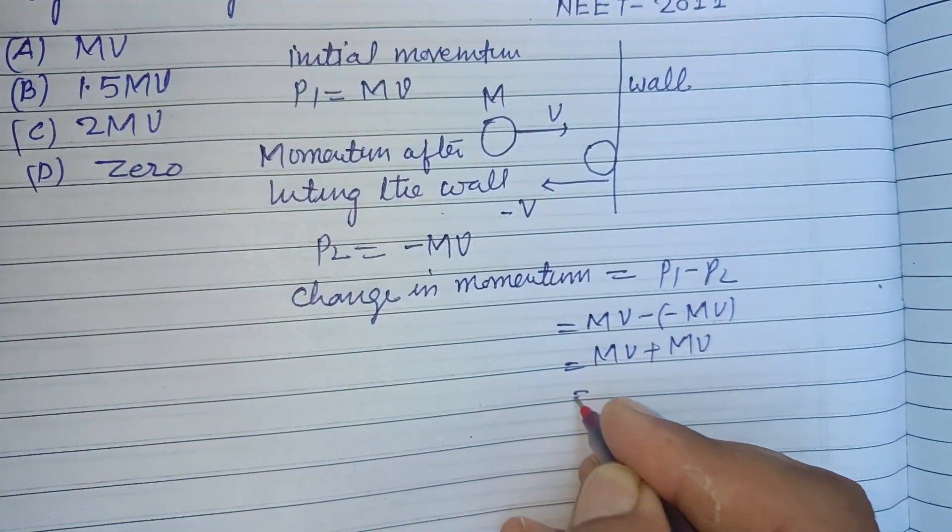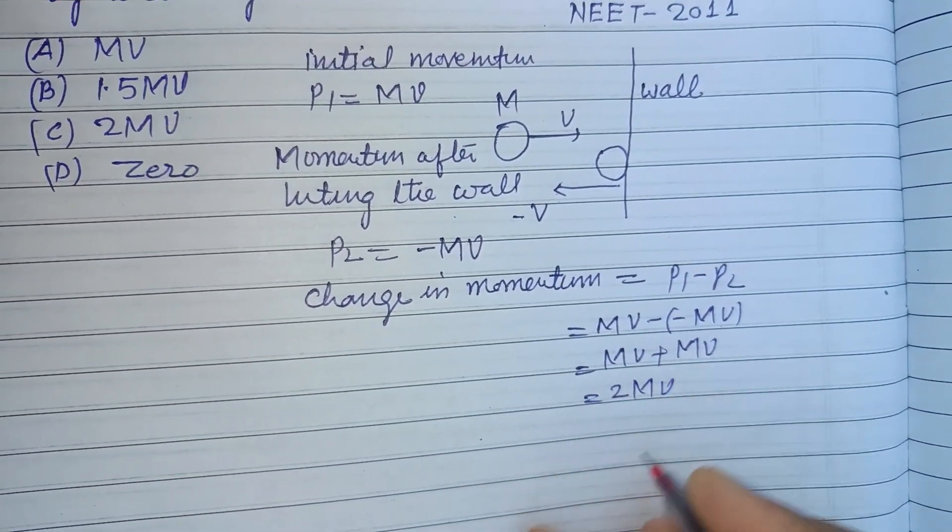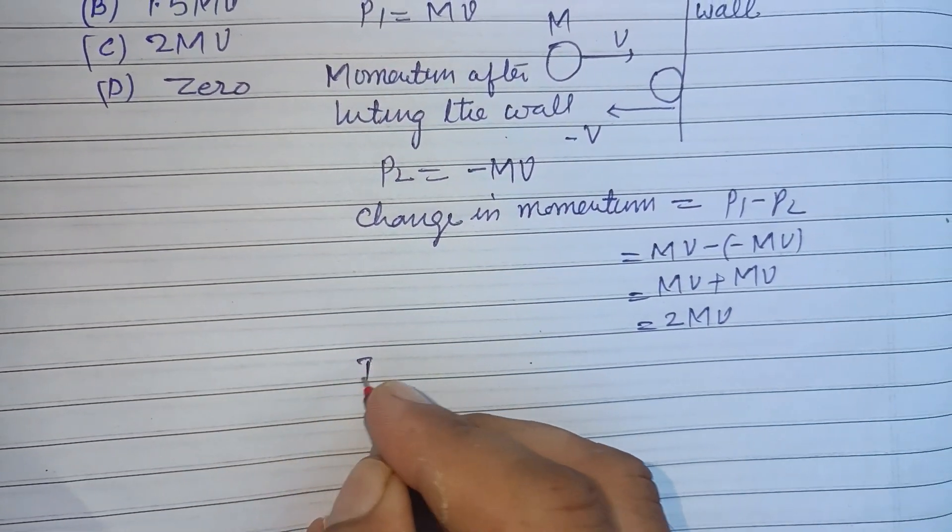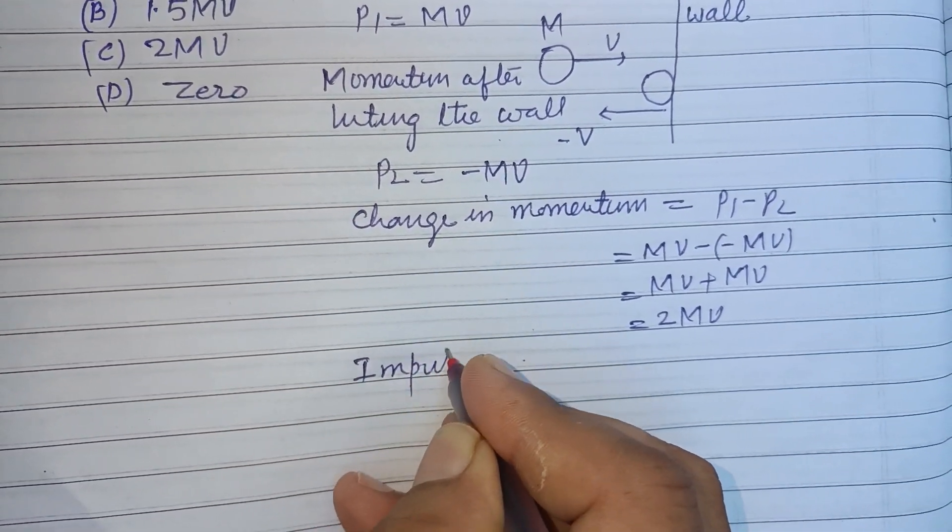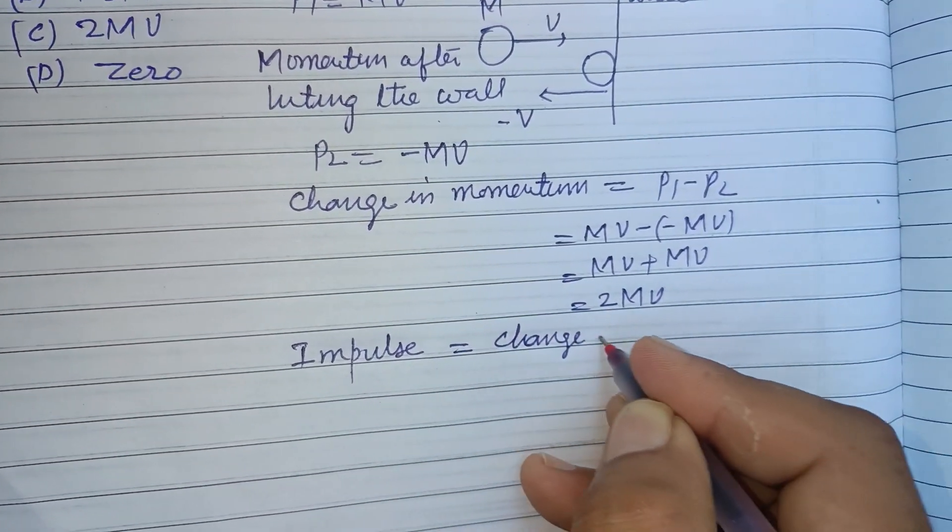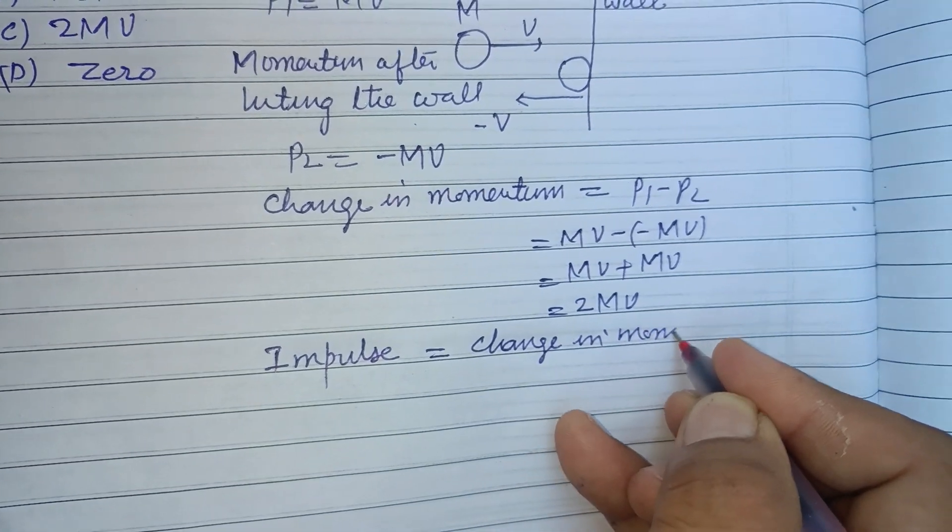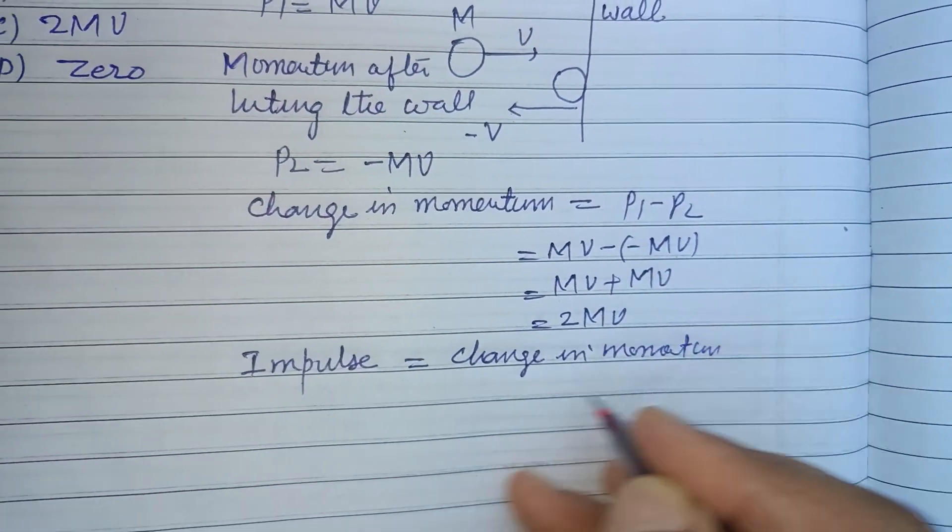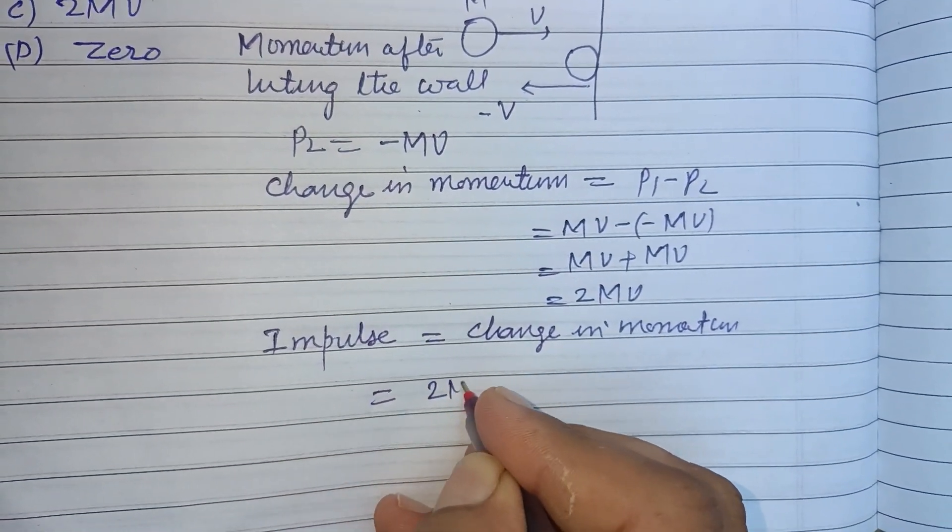And 2MV. And you know that impulse equals change in momentum, so this will be 2MV.